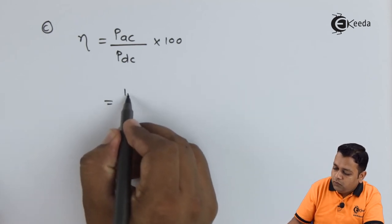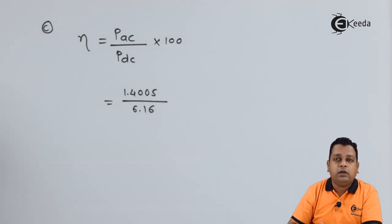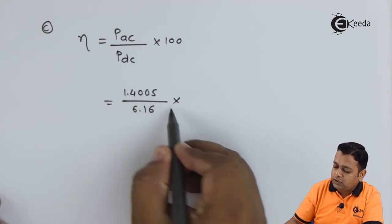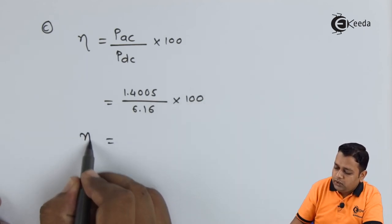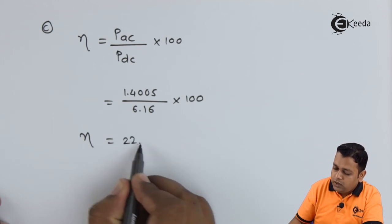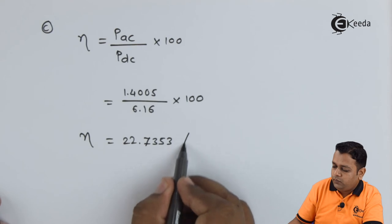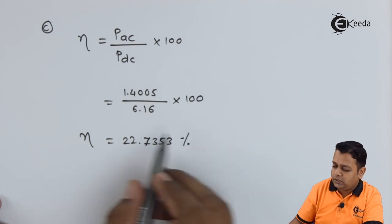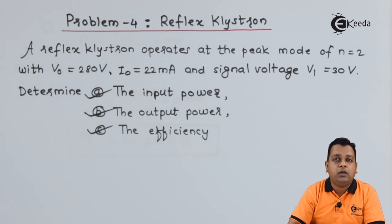So here we put 1.4005 in the numerator in the denominator 6.16 will be there in multiplication to 100 for this ratio. So finally the efficiency is obtained as 22.7353 so it is in terms of percentage. So this was our problem statement for the reflex klystron we have computed the input power output power and the efficiency also.